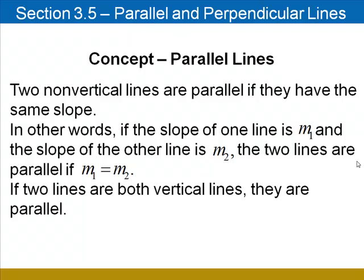Two non-vertical lines are parallel if they have the same slope. In other words, if the slope of the first line is M1 and the slope of the other line is M2, the two lines are parallel if M1 is equal to M2. If two lines are both vertical lines, they are parallel as well. Recall that vertical lines have undefined slope.